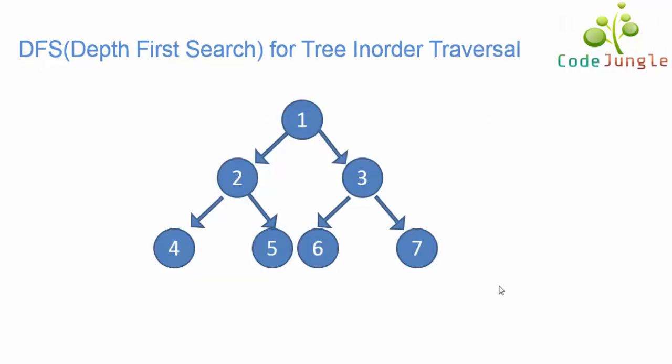In this video, we will discuss the DFS algorithm for trees. There are three methods to execute DFS for trees: pre-order traversal, post-order traversal, and in-order traversal. In this video, we will be discussing in-order traversal for trees. We have other videos for DFS on graphs as well as DFS for trees using pre-order and post-order methods. Links have been given below in the description box.